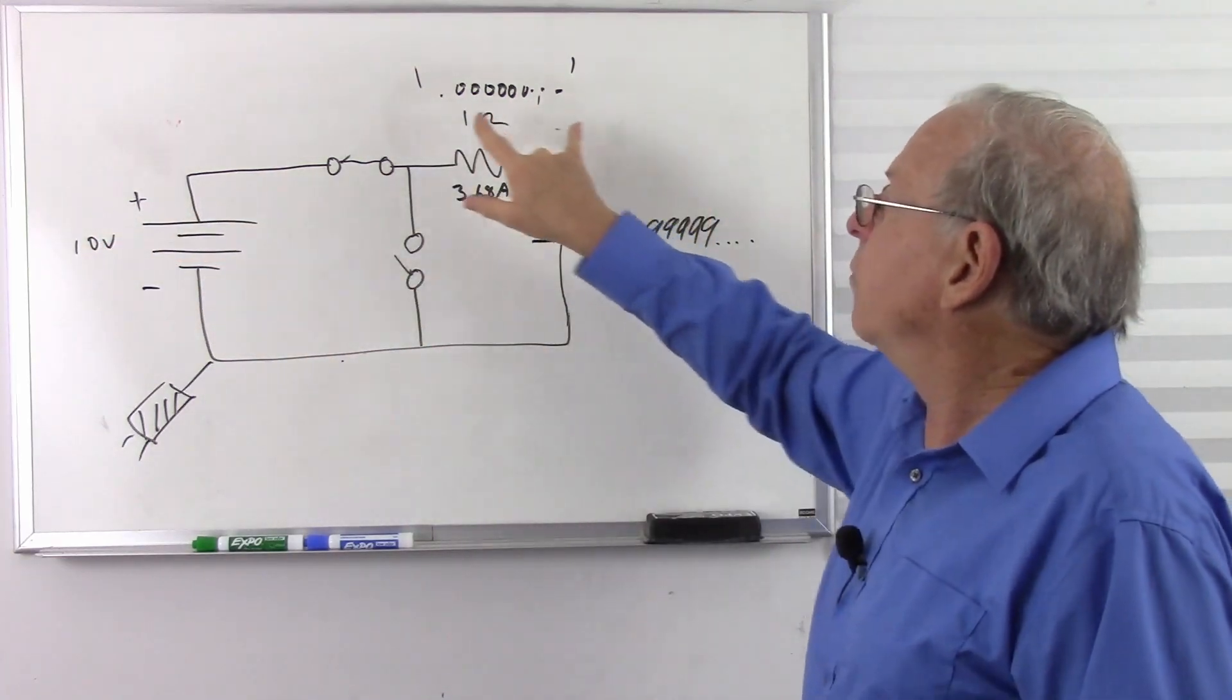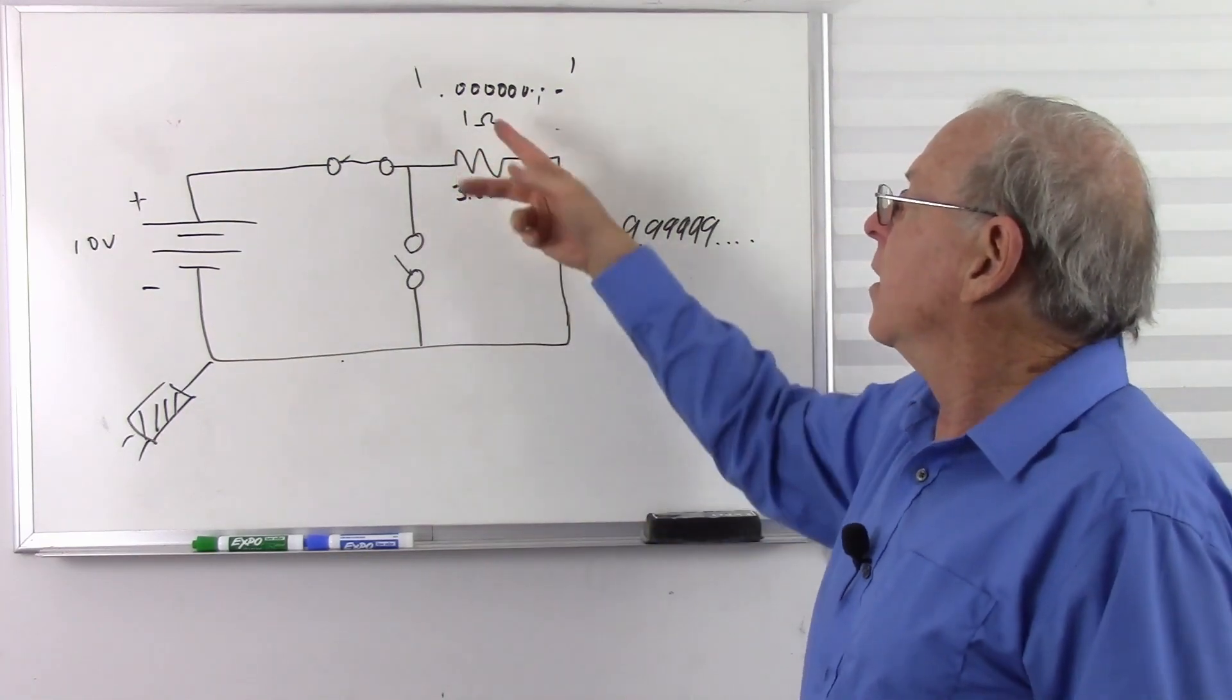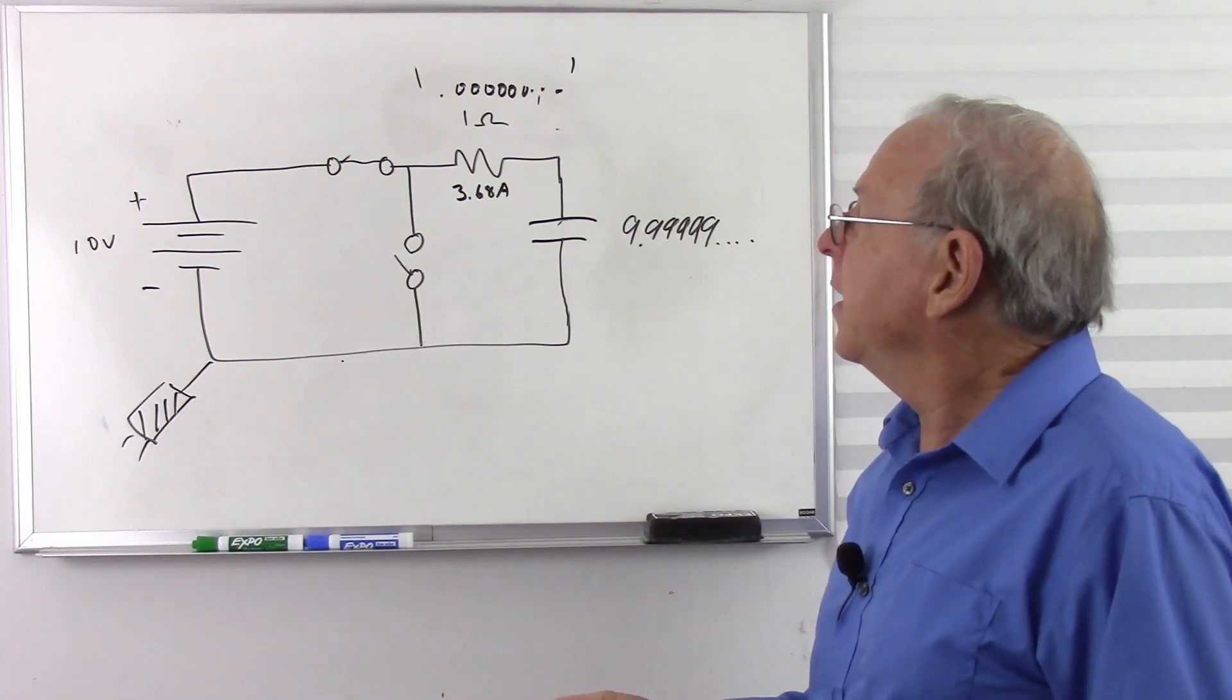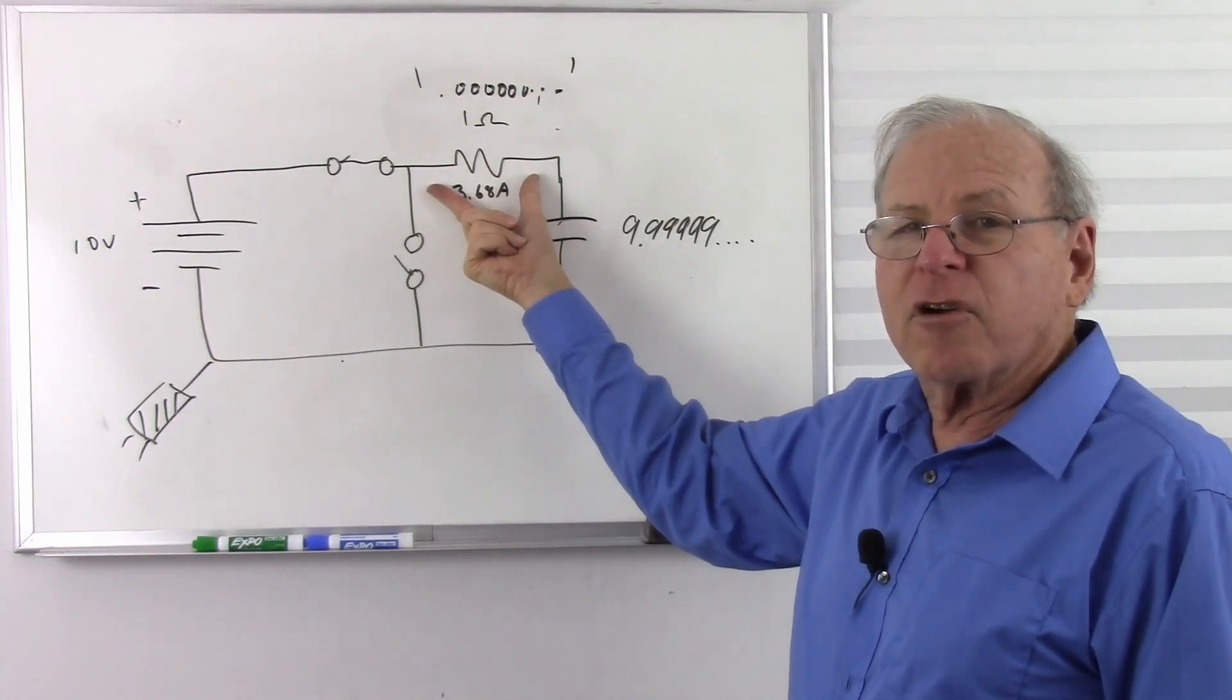And of course, those two voltages will add up to my 10 volts, but I also have a very, very tiny current flowing, indicative of what's going on. So the question is, do I have voltage across here?